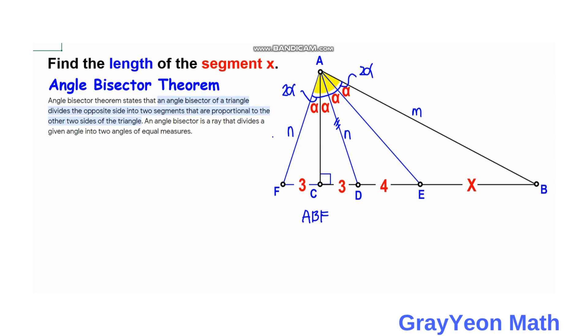The sides are proportional to the length of the two sides. So for the left of the bisector it will be 3 plus 3, which becomes 6. And for the other side it will be 4 plus x.